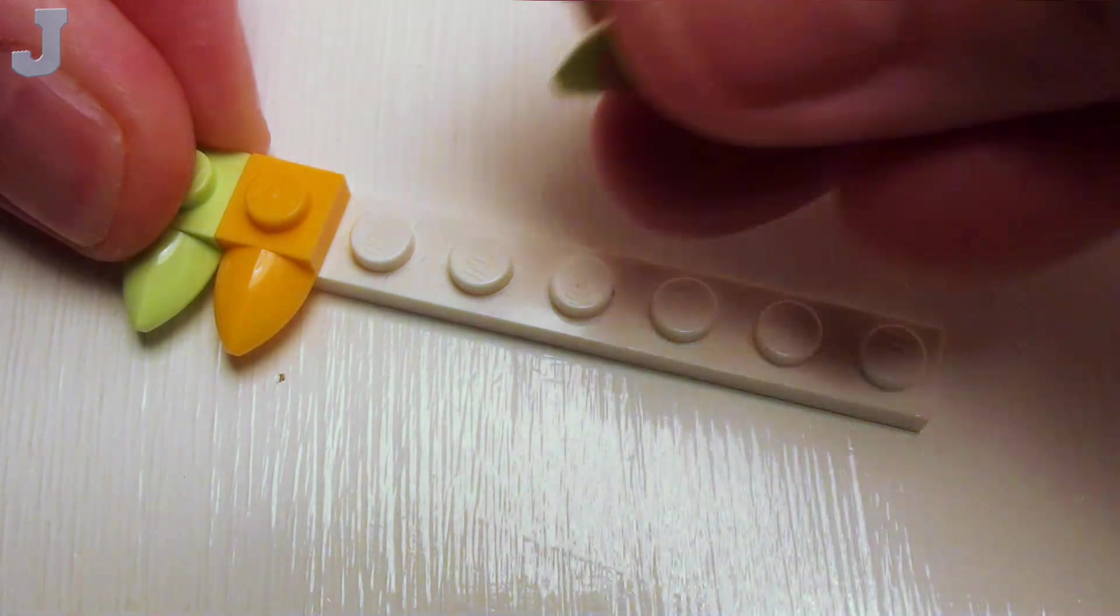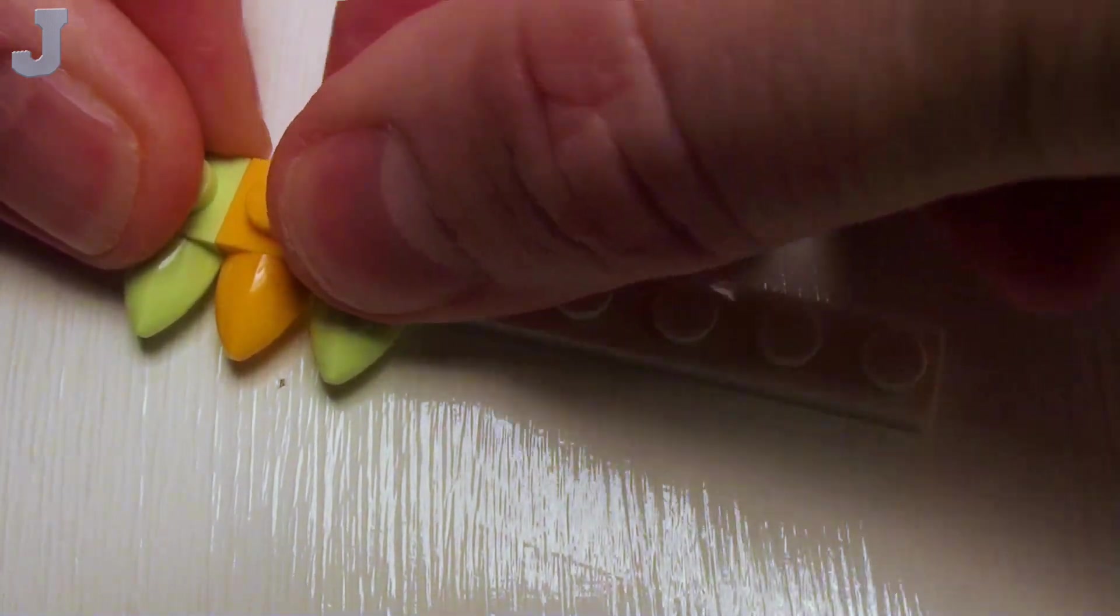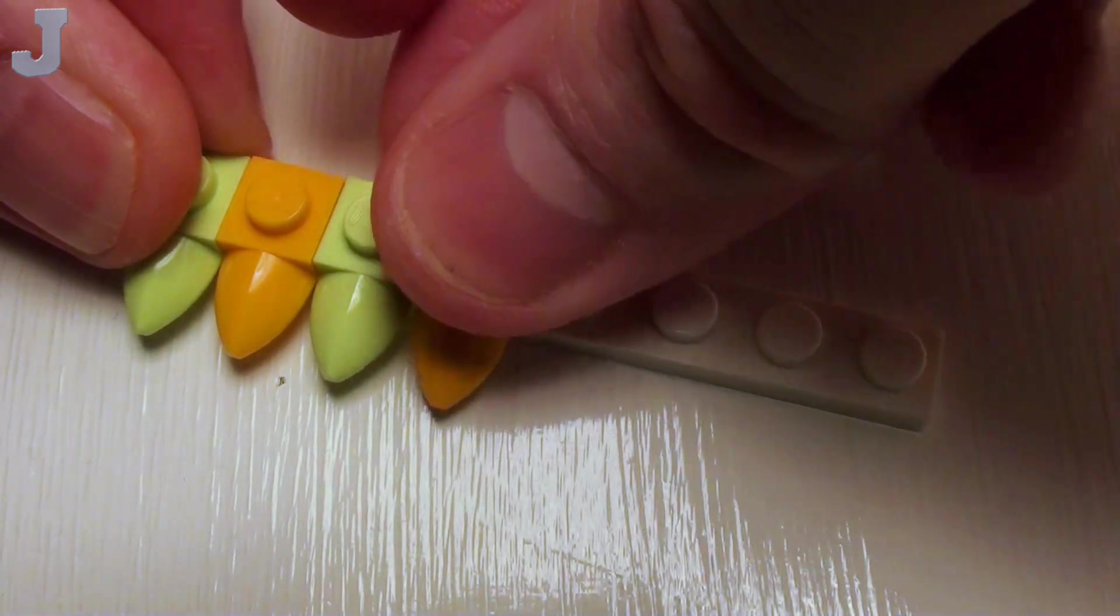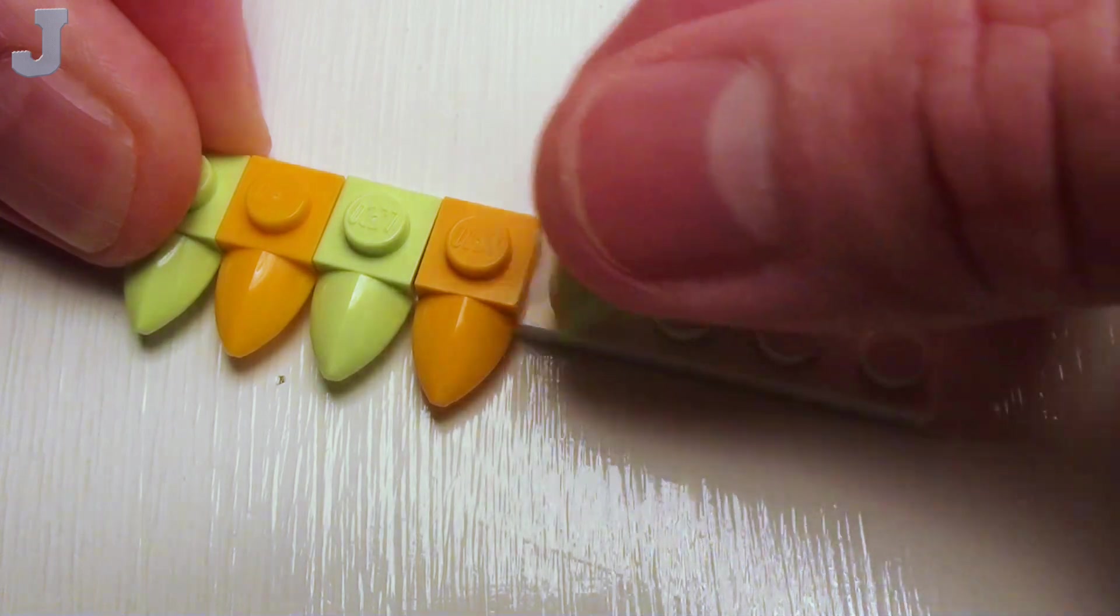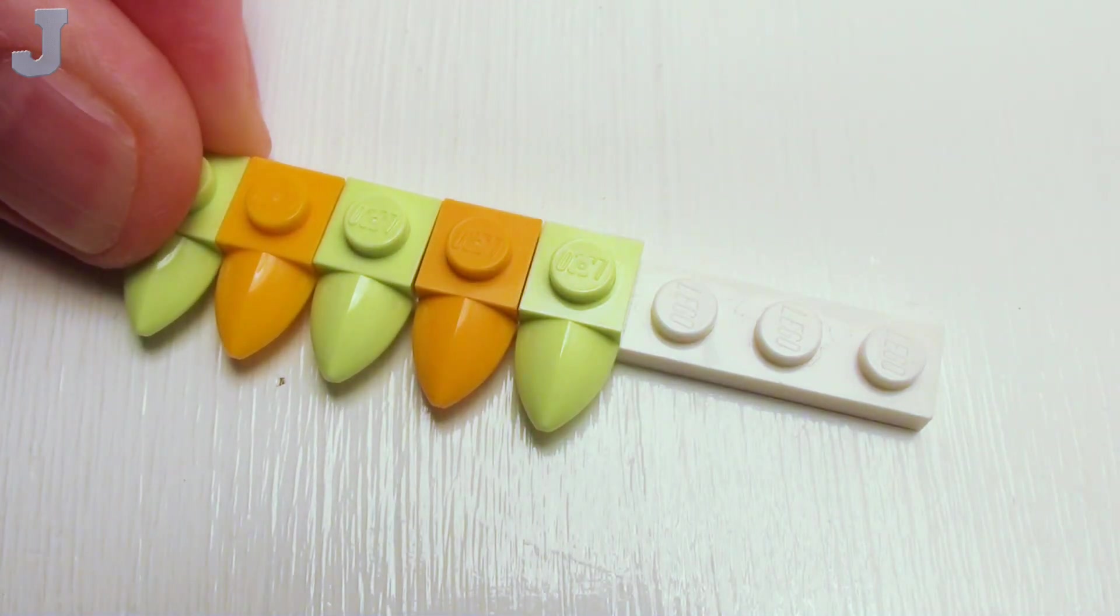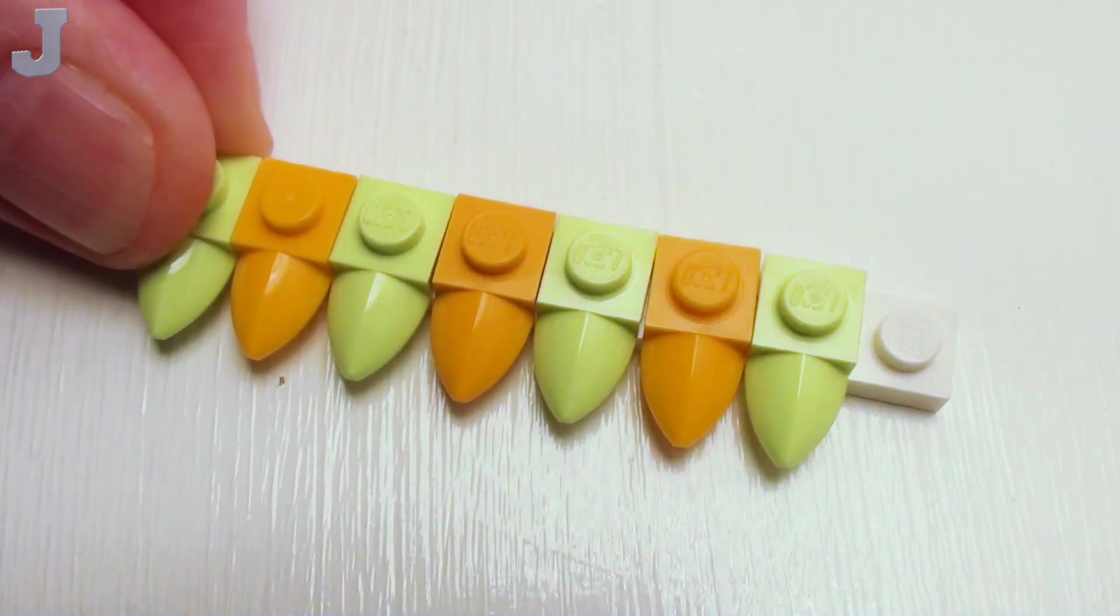Now what I'm going to do is alternate between spring green and flame yellowish orange. It's a nice color combination, and we are going to need to make two of these.